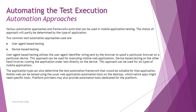The application type also determines the test automation framework suitable for that application. Mobile web can be tested using the usual web application automation tools on the desktop, whilst native apps might need some specific tools. Platform providers — like Android and iOS — may also provide automation tools dedicated for their platform. The type of application could be web-based, native, or hybrid.